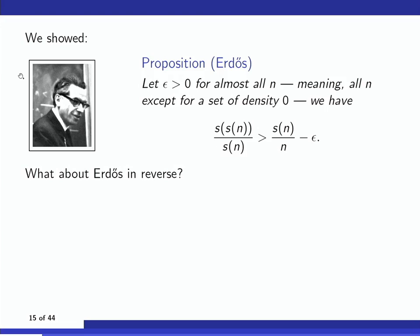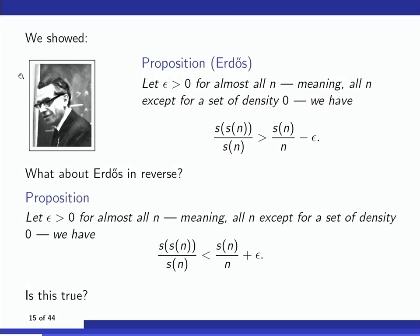So far this doesn't count as a recent development — it's a 60-year-old argument of Erdős. But I want to talk about recent developments motivated by thinking deeply about this argument. One of the key results was the proposition that the abundancy of s(n) is at least about the abundancy of n almost always. When you see an inequality in one direction, you can ask: is there a reverse inequality? Could you replace 'greater than' with 'less than' and '−epsilon' with '+epsilon'? Can you do this Erdős argument in reverse?